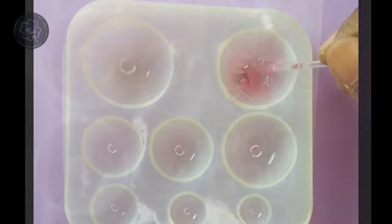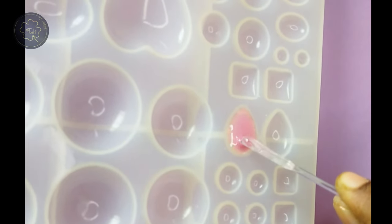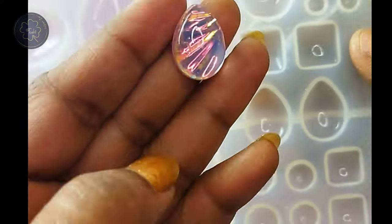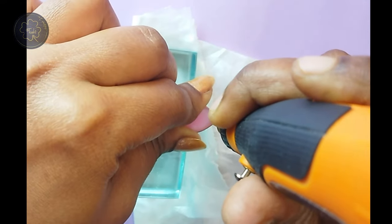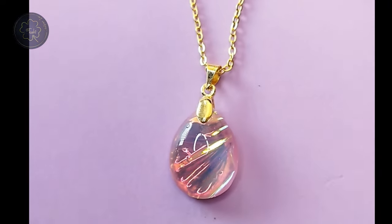Once the resin is mixed well, pour the mixture on top of the pendant, covering it completely. Place the pendant back into the UV light to cure for another 120 seconds. Carefully remove the pendant and drill a hole in it to attach the pinch bales and chain. Now our beautiful pendant is ready to wear.